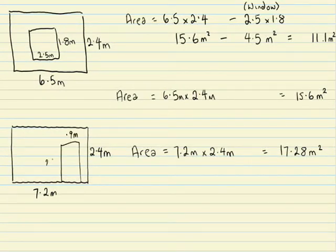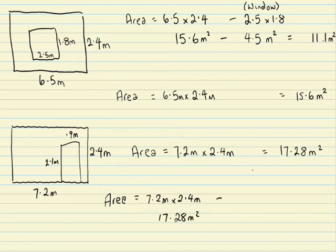Take away the area of the door which is 2.1 meters by 0.9 meters. So 17.28 take away 1.89 is 15.37 meters squared.